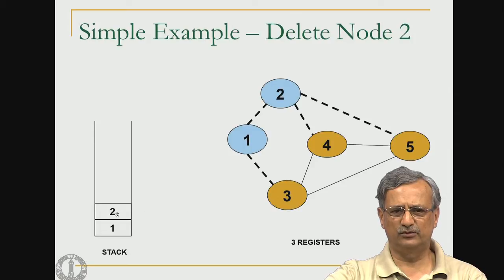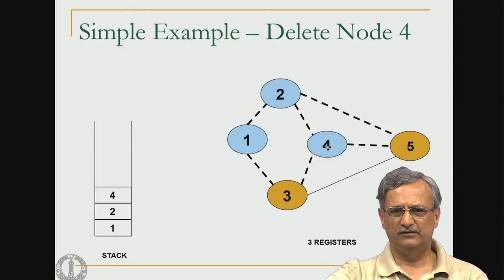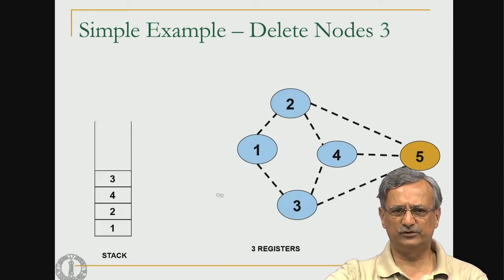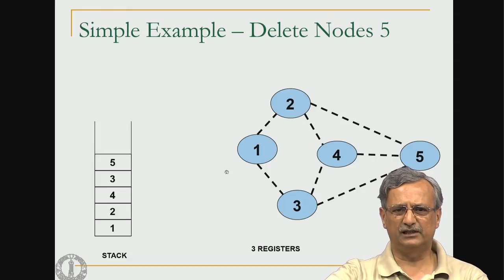We choose node 2, remove it and its two edges, leaving nodes 3, 4, and 5 each with degree 2. We then choose node 4, remove it and place it on the stack. We then remove node 3 and finally node 5, leaving the graph empty. Since the graph was completely reduced, it can be colored with 3 registers. Coloring proceeds in reverse stack order: 5, 3, 4, 2, 1.